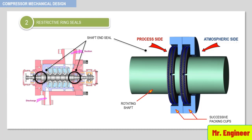The shaft packing is always of the floating type and consists of several annular packing caps and segmental packing rings. In this example, you can see two packing caps and four packing rings. This arrangement is held inside the compressor as a complete assembly, using the appropriate studs and nuts that secure the assembly against a sealing gasket.